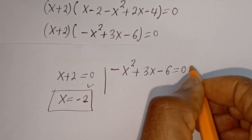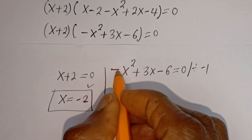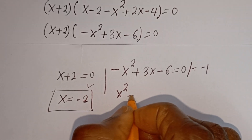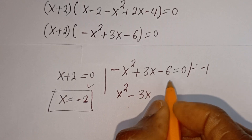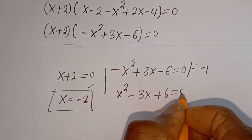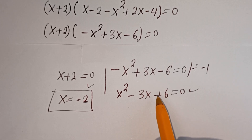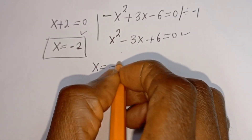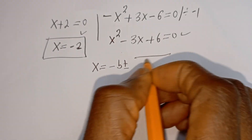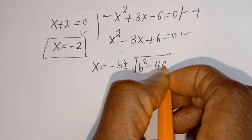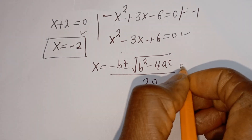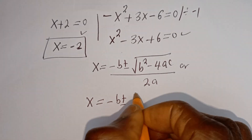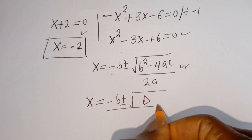The second case is minus S squared plus 3S minus 6 is equal to 0. We can divide all terms by minus 1. Minus S squared divided by minus 1 is S squared. Plus 3S divided by minus 1 is minus 3S. And minus 6 divided by minus 1 is plus 6, equal to 0. This is a quadratic equation. Let's solve this using the quadratic general formula: S is equal to minus B plus or minus square root of B squared minus 4AC, over 2A.